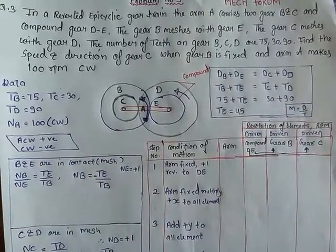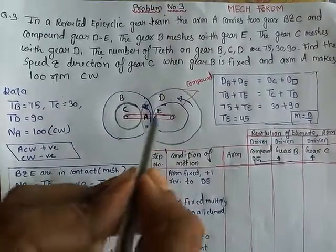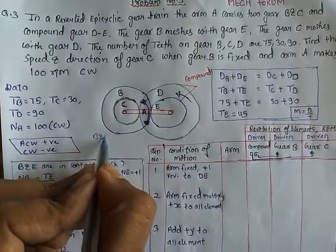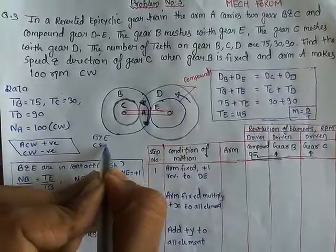So we will start our procedure by geometry. Which gears are in contact? B and E are in contact and C and D are in contact.